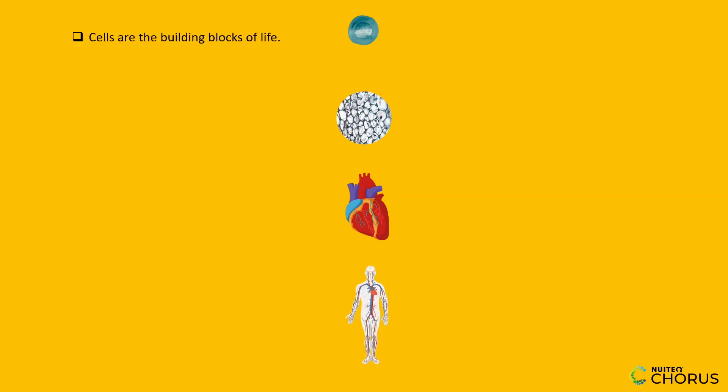Cells are the building blocks of life. Tissues are groups of similar cells. Organs are made of tissues. Systems are groups of organs working together.